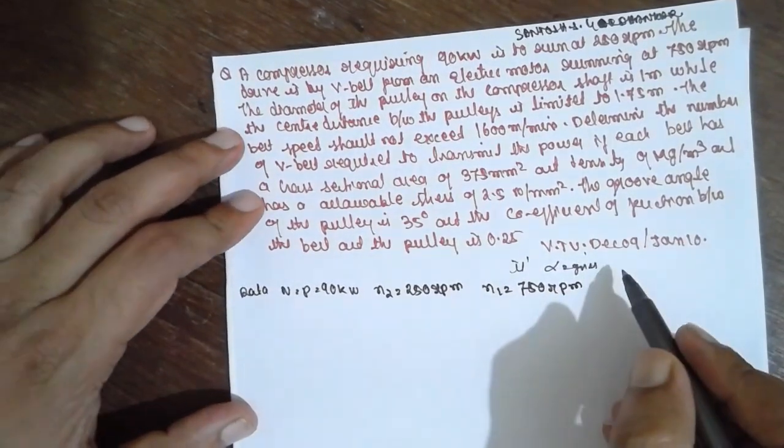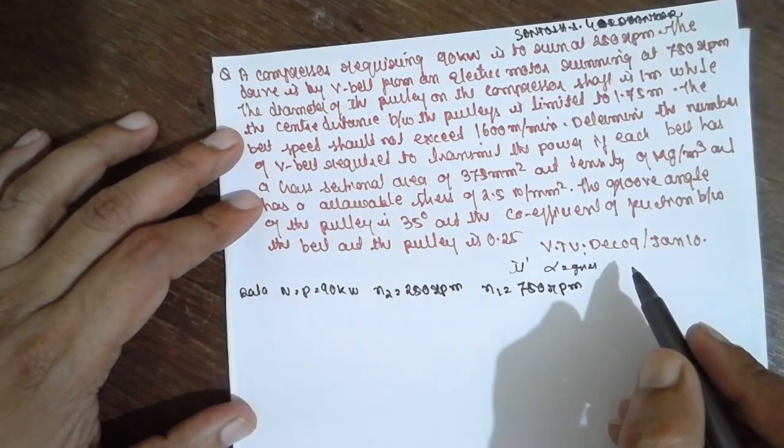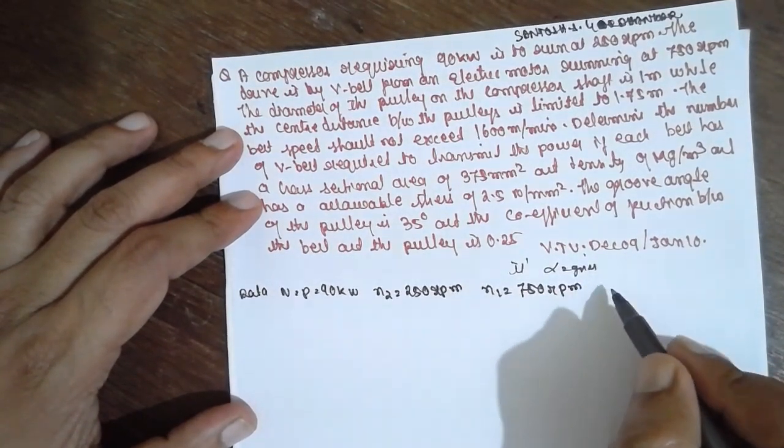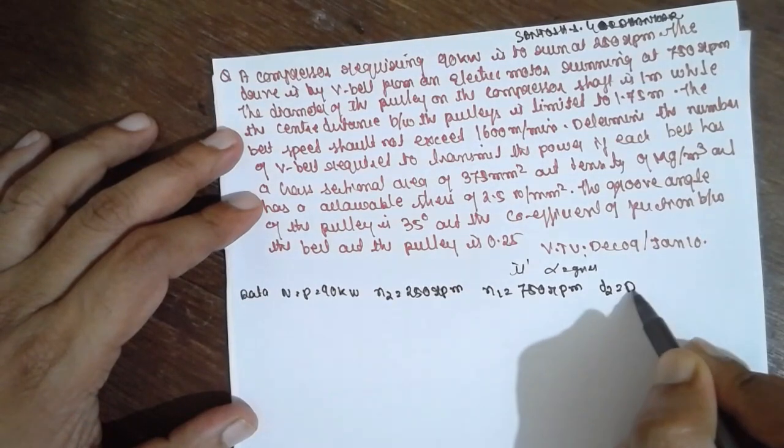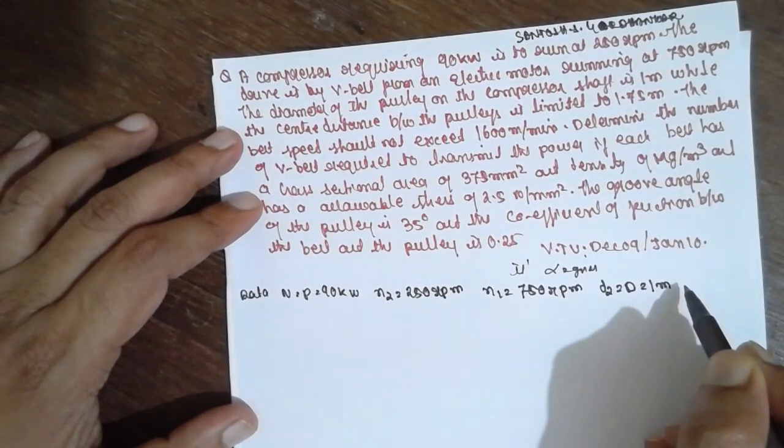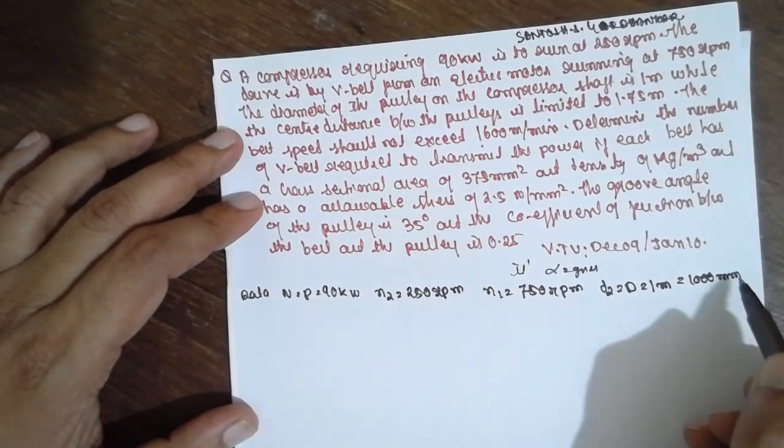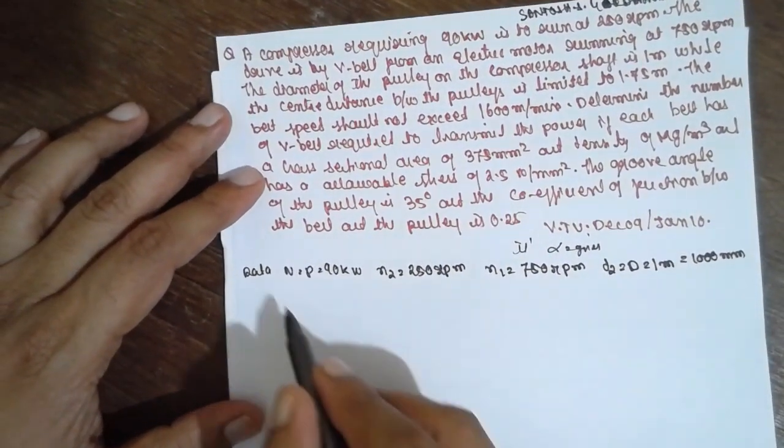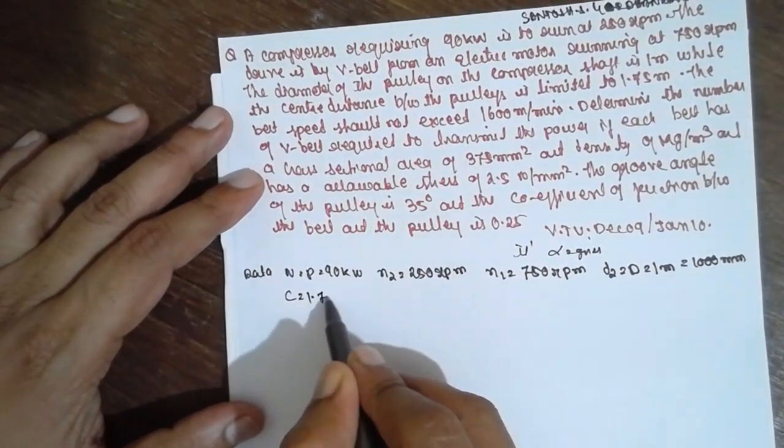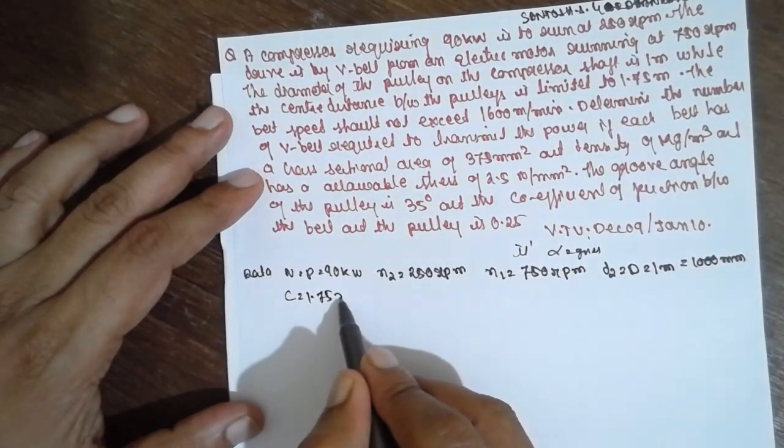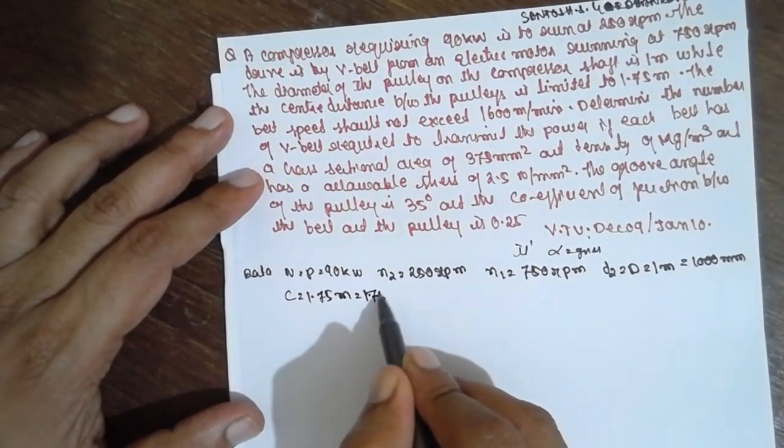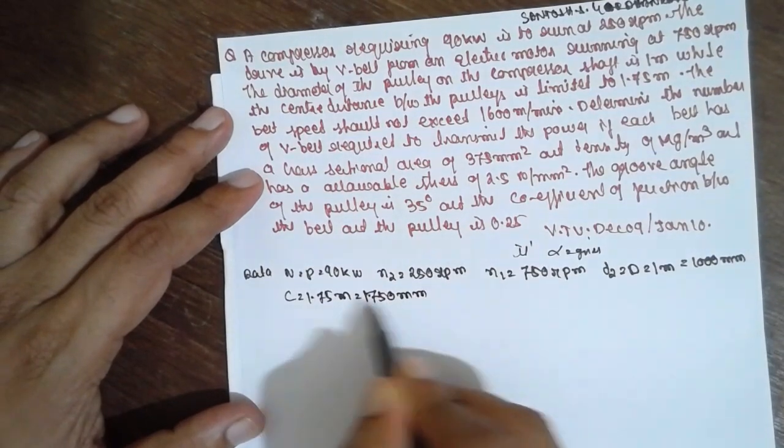The diameter of the pulley of the compressor shaft is d2. They have given d, not the small d, it is very important here. And center distance they have given 1.75 meter, have to convert into 1750 mm into 1000.